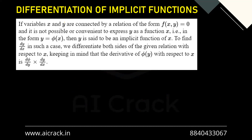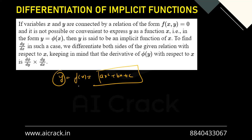Now let's talk about differentiation of implicit functions. Consider y = f(x) = ax² + bx + c — here y is explicitly defined in terms of x; we can separate y and x. This is called an explicit function. Now consider ax²y + bxy² = cx³y⁴. Here we cannot separate y and x onto different sides — this is called an implicit function.